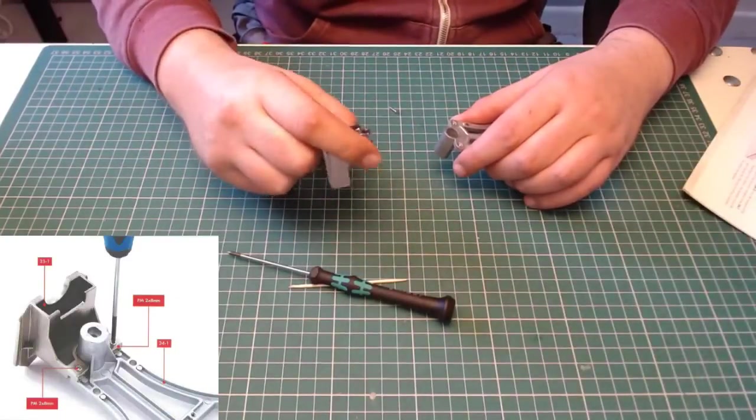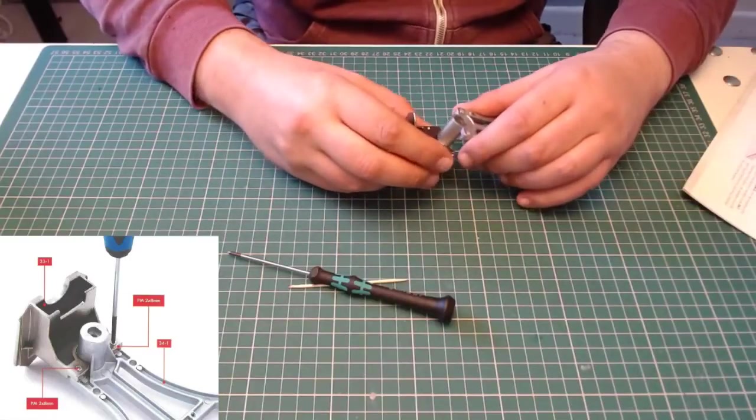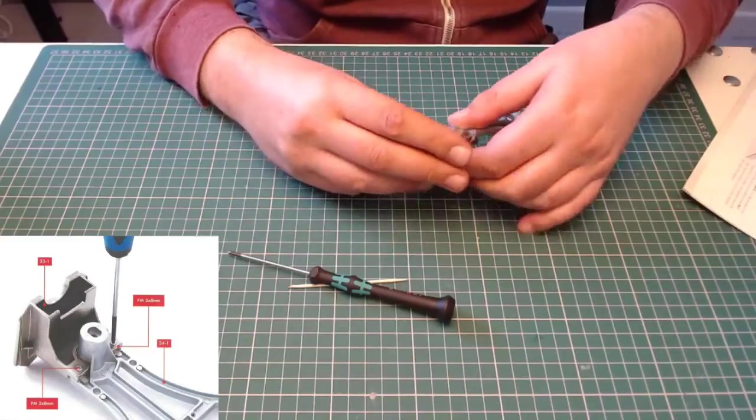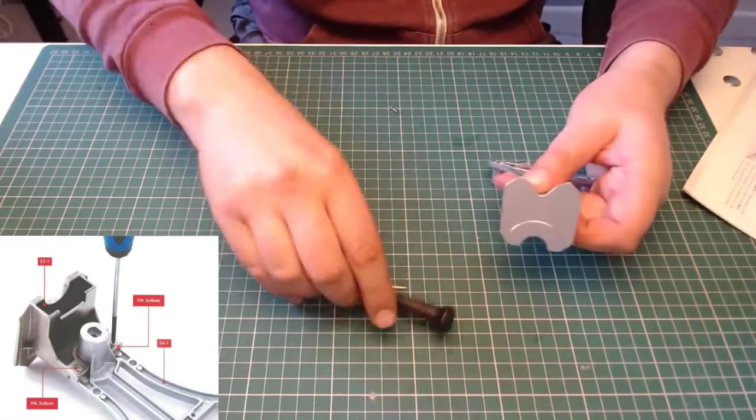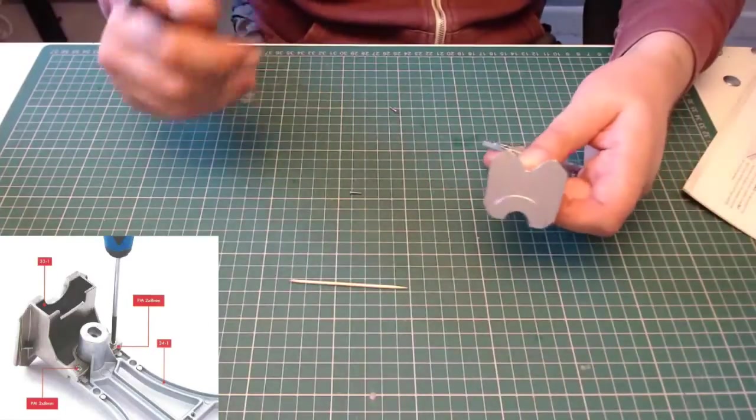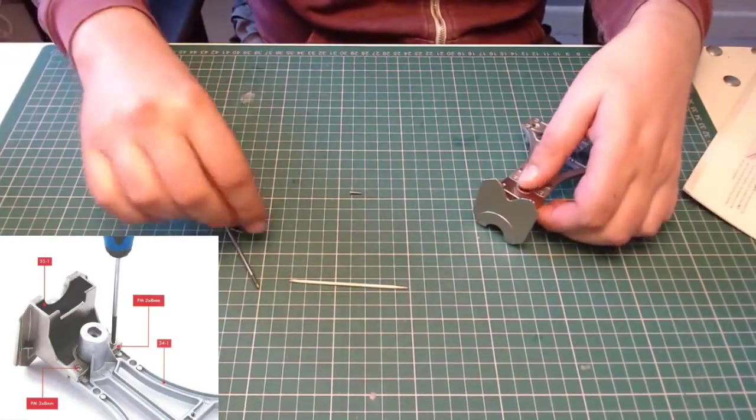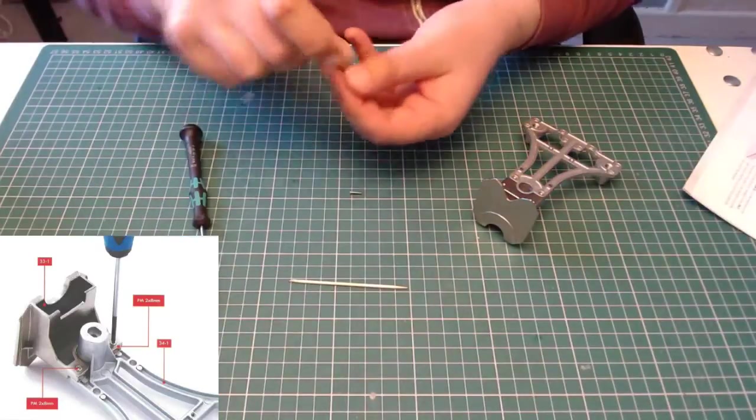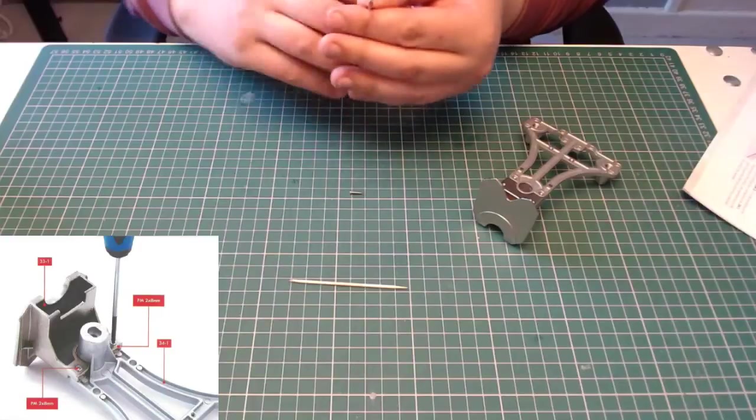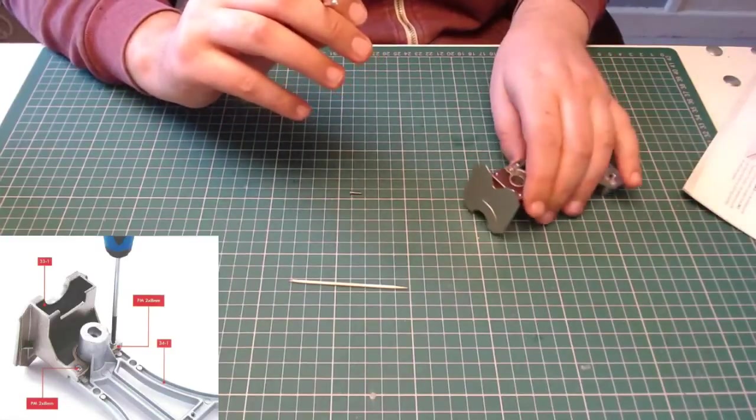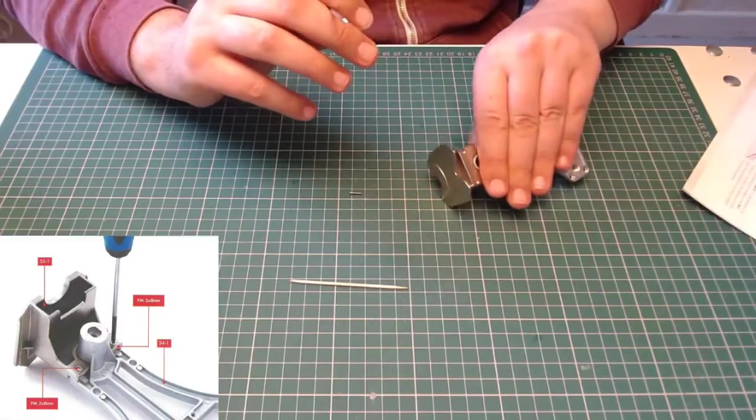It literally just wants to slot down into there like so, and then we need to put a screw in. Let's get the screwdriver loaded up. It's saying it wants a PM2 times 8 millimeter screw.